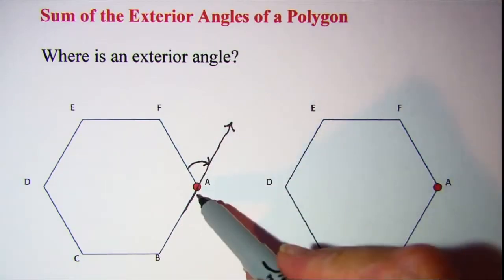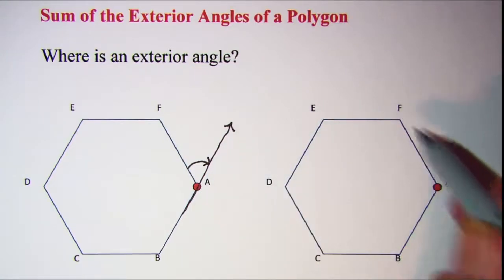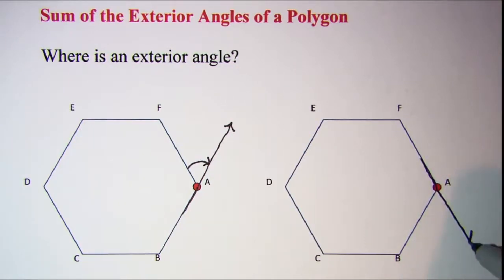Now, at vertex A, if we wanted to extend the other side, FA, we could do that. And our exterior angle would be at this location.